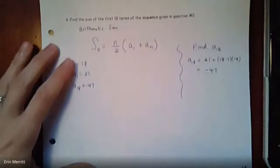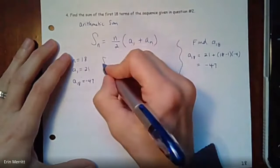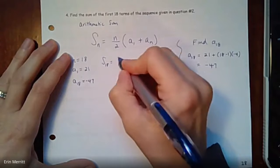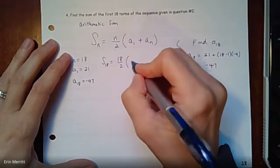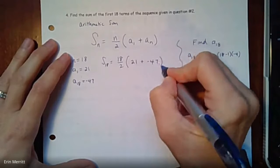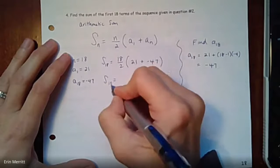Now we can plug all that in here. The sum of the first 18 terms would be 18 over 2, and then 21 plus -47. There's your post video question right there - what's that answer?